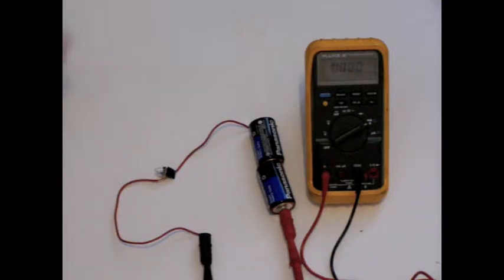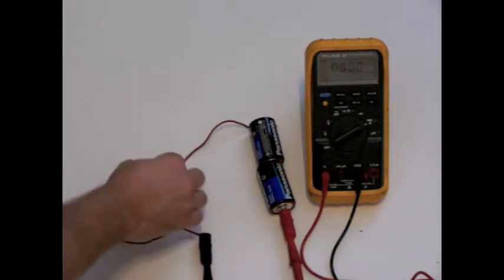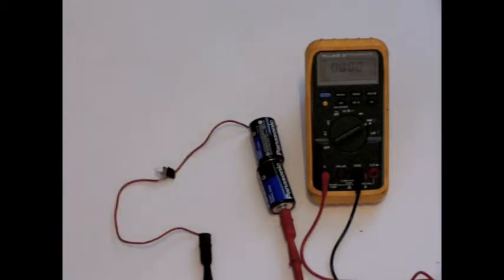In here, we have a simple circuit. We have two batteries providing the charge, a wire, and a light bulb providing the resistance.